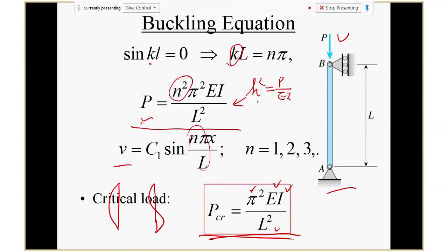If a safety factor of four is required for this system, then the allowable load P equals the critical P divided by four. So the allowable load would be pi squared EI over 8L squared.